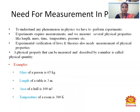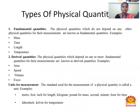For example, the mass of a person is 65 kg, so mass is represented by the unit kg. The length of the table is 3 meters, so length is represented by the unit meter. The area of the hall is 100 meter square, so the unit of area is meter square. Next, temperature is represented by Kelvin.